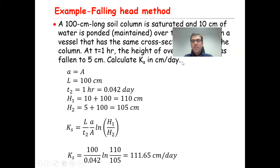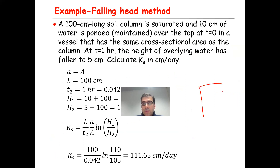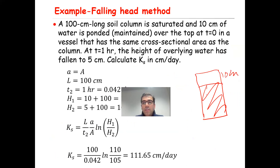Here is a simple example. A 100 cm long soil column is saturated, and 10 cm of water is ponded over the top at T = 0 in a vessel that has the same cross-sectional area as the column. So this vessel is 10 cm in height, the soil column is 100 cm, and the cross-sectional areas are the same.